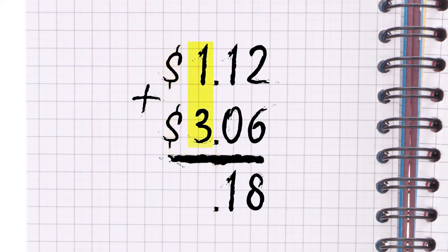Now it's time to add again. 1 plus 3 equals 4. The 4 gets placed underneath the line on the left side of the decimal. Add the dollar sign and there's your answer.